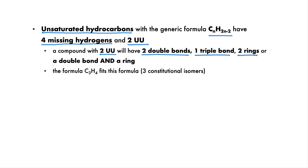The formula C3H4 fits this pattern and there are three possible constitutional isomers. Here are the three isomers: one isomer has two double bonds, one has a triple bond, and one has a ring and a double bond.